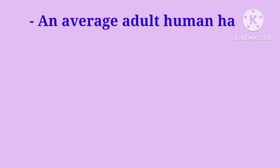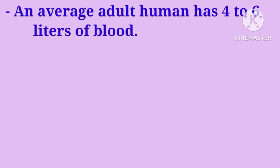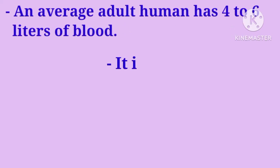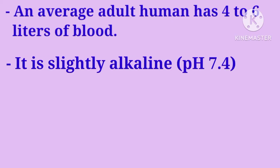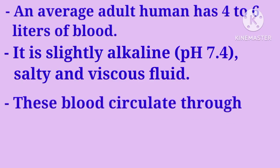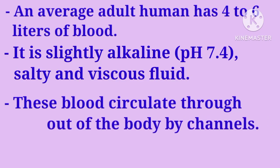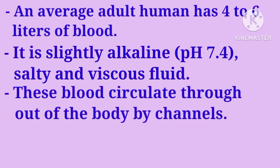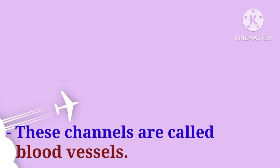An average adult human has 4 to 6 liters of blood in their body. It is slightly alkaline with a pH of 7.4, slightly salty in taste, and is a viscous fluid — slightly thicker than water. This blood circulates throughout the body through channels called blood vessels.